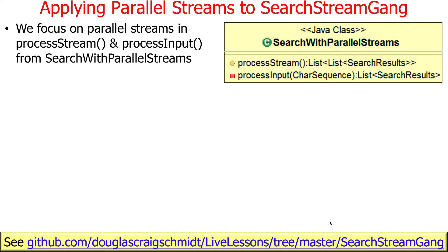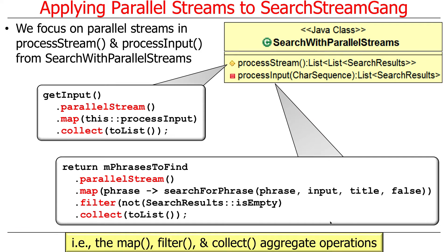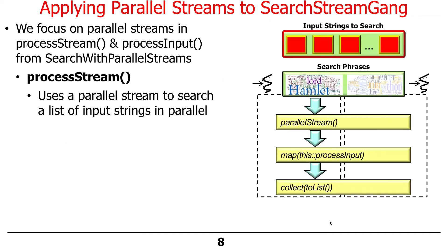We're going to focus on two methods, just like we did with the sequential version: process stream and process input. And we're going to focus on map, filter, and collect primarily to see how those things work.